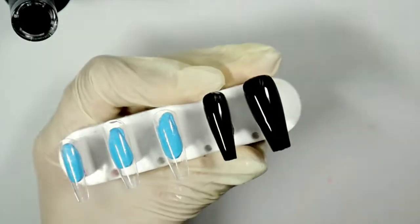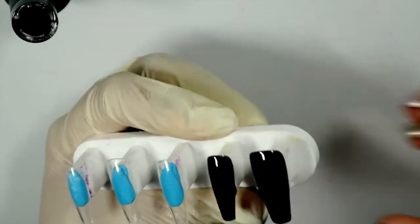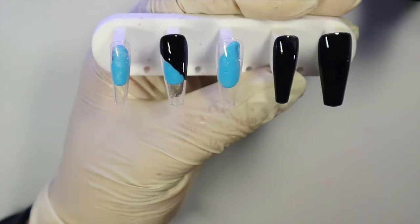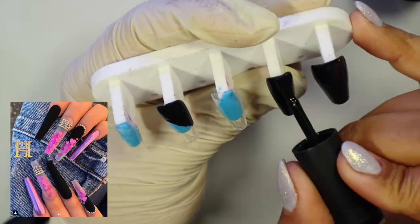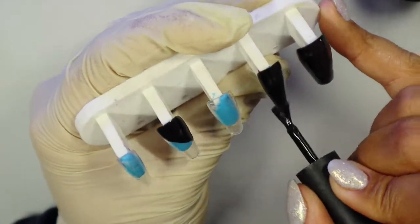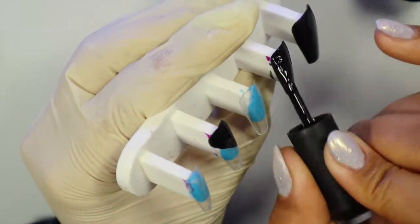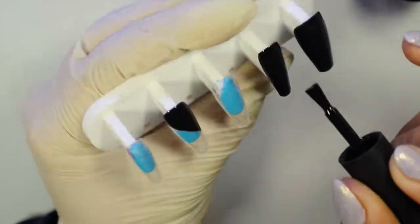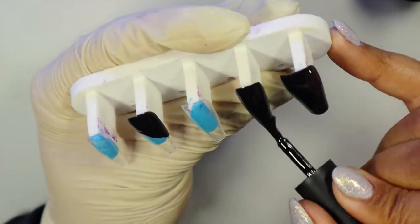So I'm just applying the gel to the couple of nails where they need to be black according to the inspiration picture, which I will insert on the screen somewhere here. So I'm just going in with my second coat and we'll cure that off and then move on to our next step, which is the heart shaped glitter.